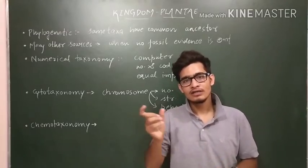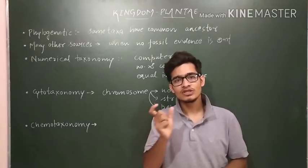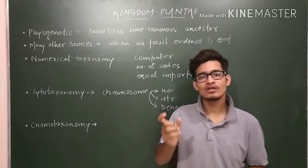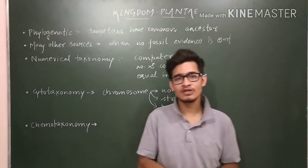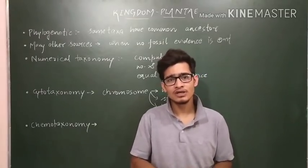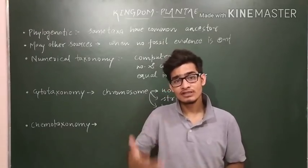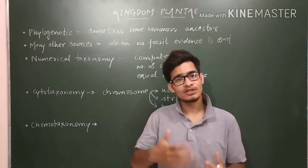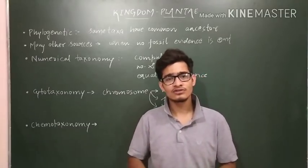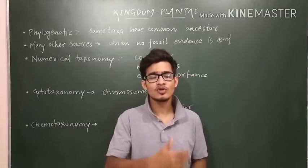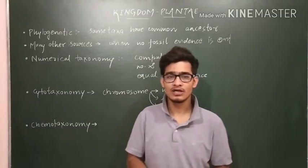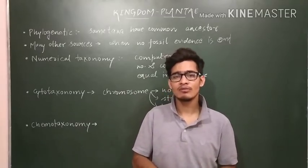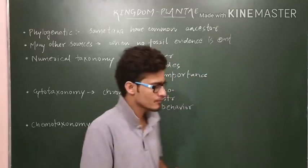After that came the natural system of classification, which was based on natural affinities between organisms, considering both internal and external structure. It is much more important than the artificial one, and the natural system was given by Bentham and Hooker.